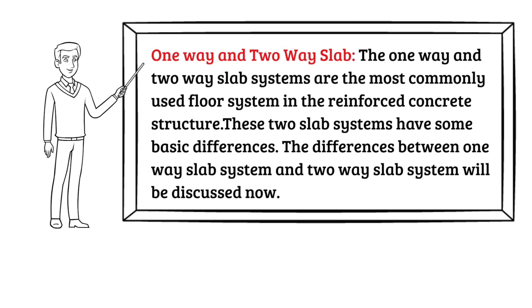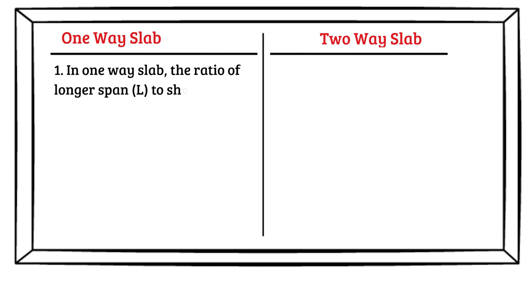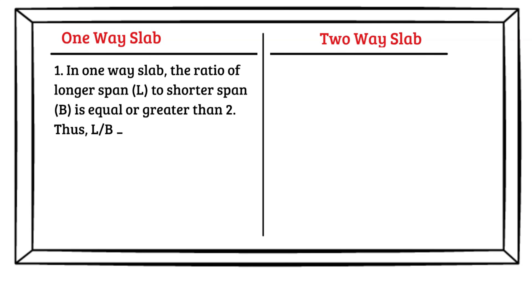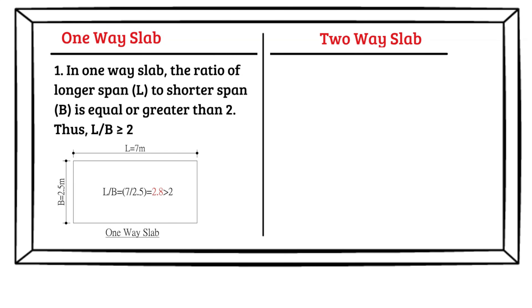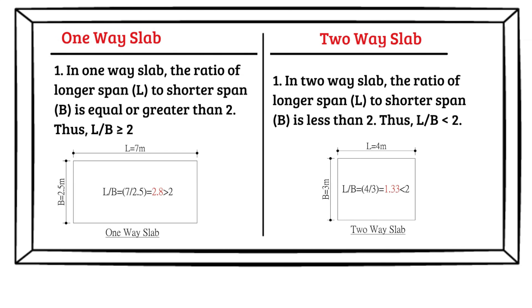Difference number one between one-way slab and two-way slab: in a one-way slab, the ratio of longer span L to shorter span B is equal to or greater than two. For example, L equals seven meters, B equals 2.5 meters, so L/B equals 2.8, which is greater than two — so it is a one-way slab. In a two-way slab, the ratio of longer span to shorter span is less than two. For example, L equals four meters, B equals three meters, so L/B equals 1.33, which is less than two — so it is a two-way slab.